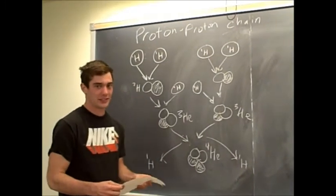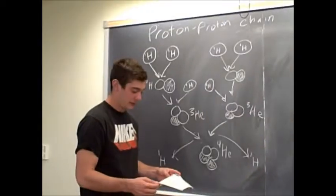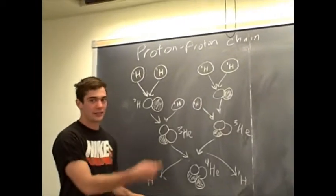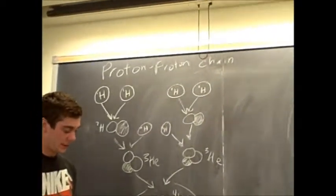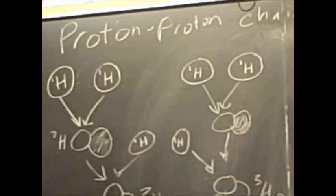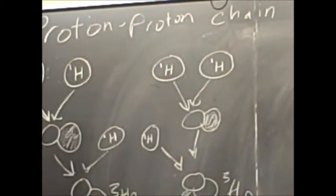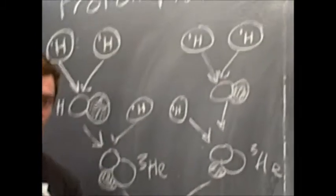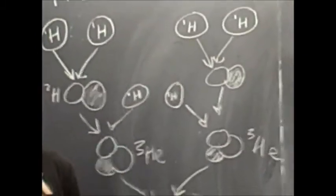So in stellar nucleosynthesis, there are two main processes in which the energy keeps cycling. This is the first one. It is called proton-proton-chain reaction. The other one is called CNO, or carbon-nitrogen-oxygen cycle.